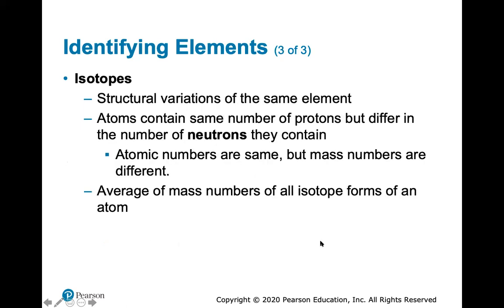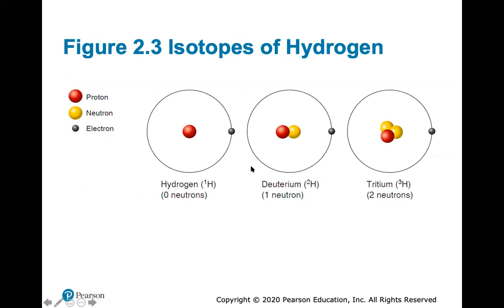Isotopes are structural variations of the same element — atoms containing the same number of protons but differing in the number of neutrons. The atomic numbers are the same, but the mass numbers differ slightly. The average of all mass numbers across isotope forms gives the atomic weight. For example, the isotopes of hydrogen are: hydrogen-1 with zero neutrons, deuterium with one neutron, and tritium with two neutrons. An isotope always has the same element, just a different number of neutrons.